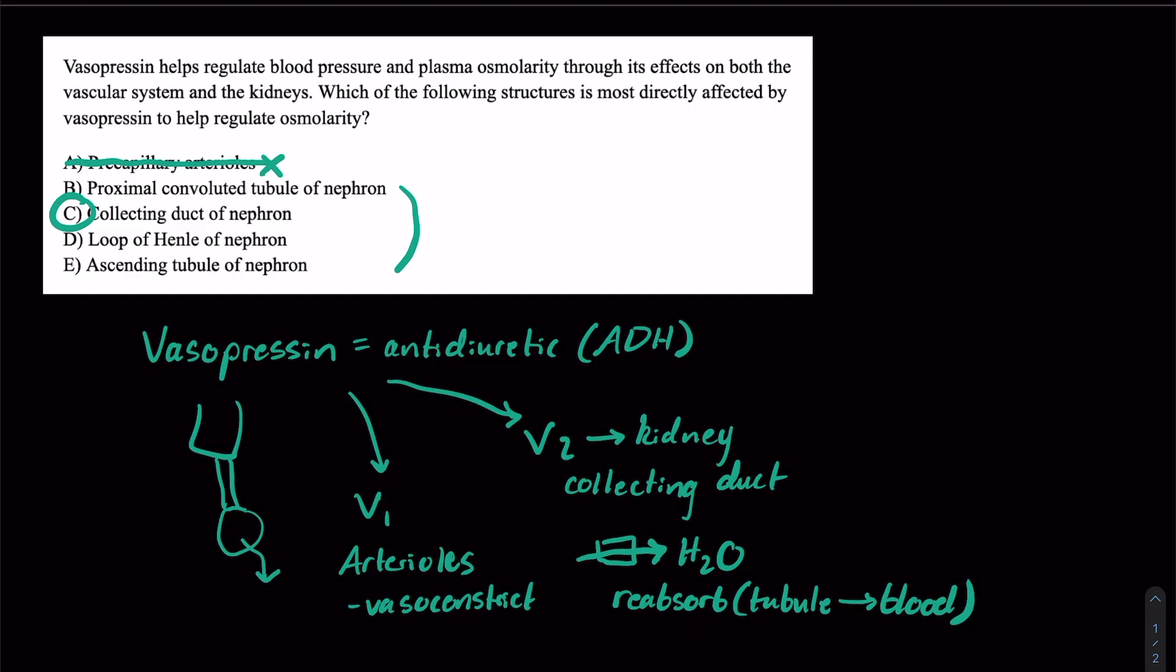Just going through the other wrong answers: proximal convoluted tubule of the nephron is more associated with where we have a lot of sodium reabsorption in the nephron. Loop of Henle is where we're going to find our countercurrent multiplier and our mechanism for actually creating a gradient to concentrate our urine eventually later in the collecting duct. And the ascending tubule of the nephron is part of our loop of Henle and helps us create that gradient in the interstitium.